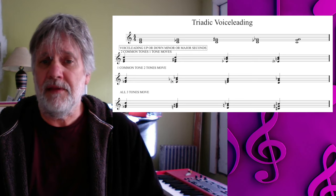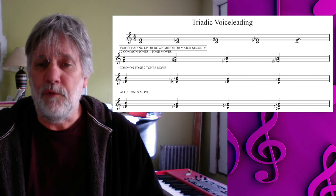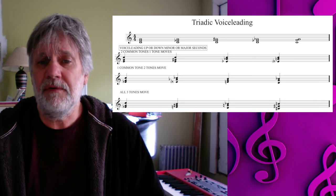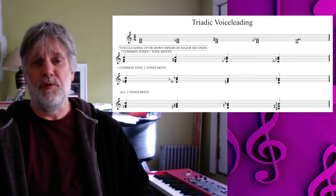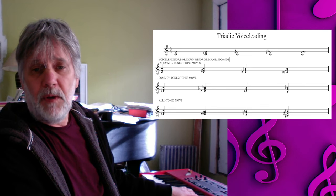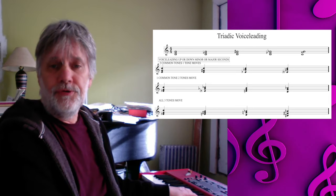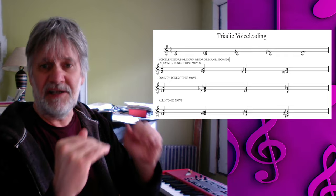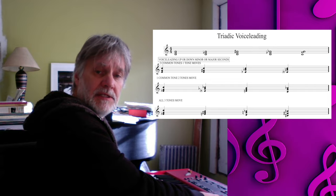The first example has voice leading limited to major and minor second movement for any of the voices. On the second system, we see two common tones and one tone moves. The third system has one common tone between any adjacent triads and two tones moving. I'm playing these in open voicings, just to give you a stronger sense that these are voices rather than just a vertical structure. So this is the third system: one common tone, two tones moving.